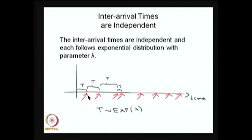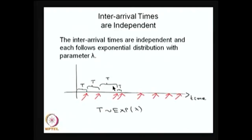Since the increments are independent and stationary, I can use similar logic for subsequent inter-arrival times — each also follows an exponential distribution. Because the increments are independent, the inter-arrival times are also independent. Whenever you have a Poisson process, in a very small interval at most one arrival takes place, with probability approximately λ·Δt. So once arrival follows a Poisson process, the inter-arrival times are exponential and independent.